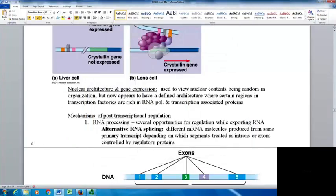Regarding nuclear architecture and gene expression, they used to view nuclear contents as being random in organization, just shoved into the nucleus. But now it appears there's a defined architecture with certain regions like transcription factories that have greater amounts of RNA polymerase and transcription-associated proteins.